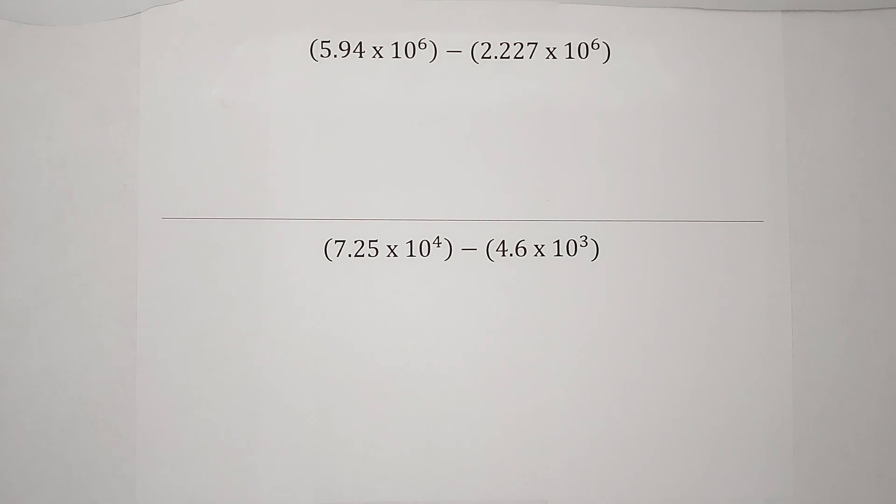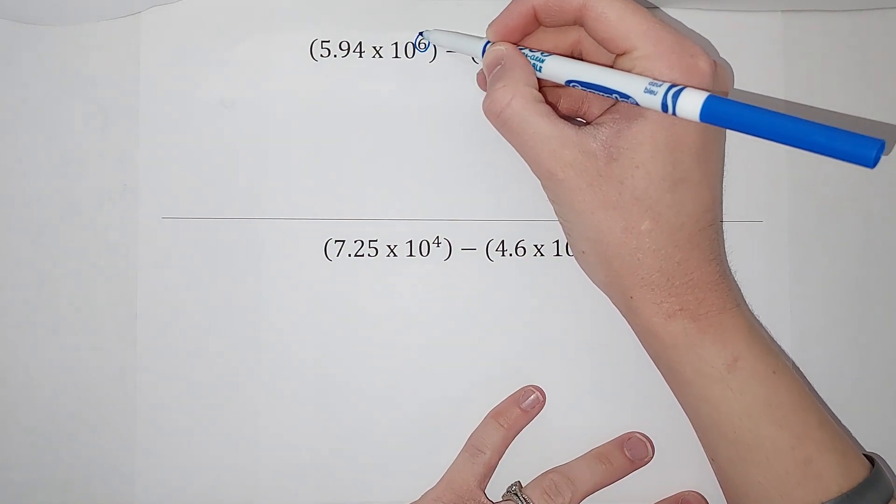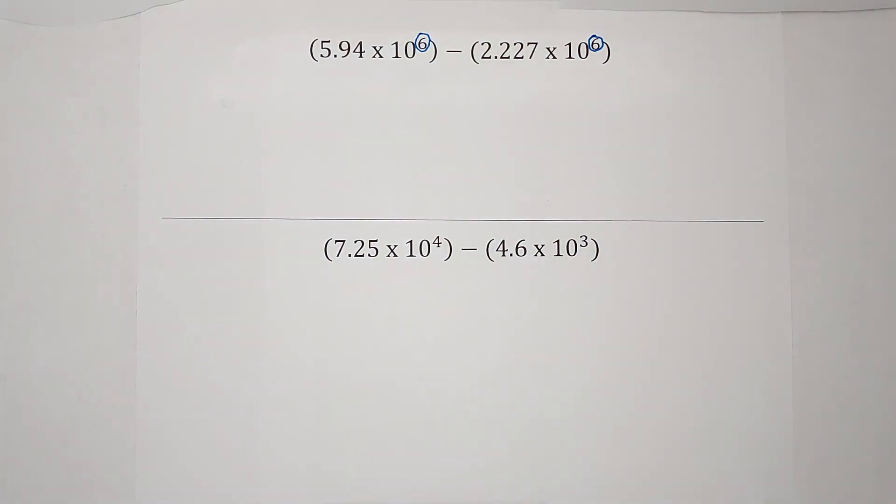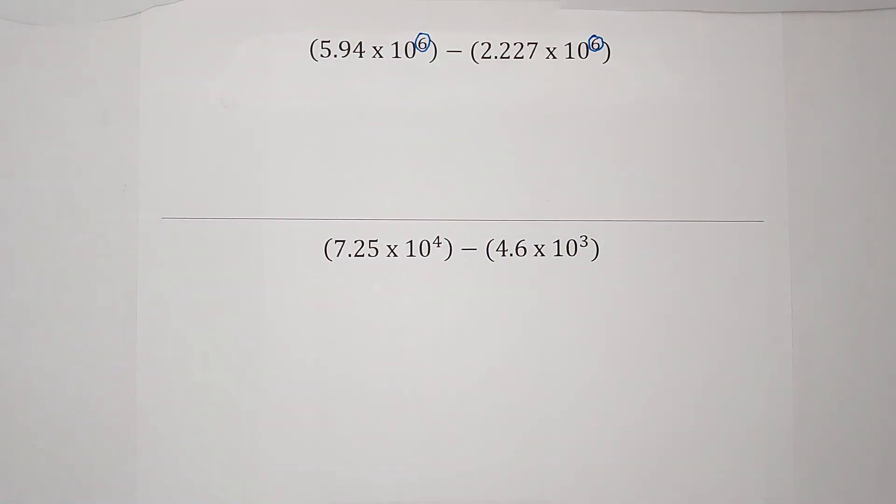When we subtract numbers in scientific notation, in this case these are really really big numbers that we've written in scientific notation. They make them easier to work with. So when we are subtracting these, what we want is we want the exponent on our 10 to be the same. When it's the same, we can just go ahead and subtract these and times it by 10 to the sixth power.